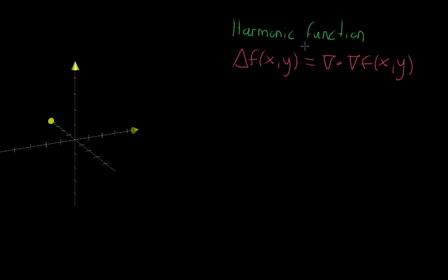Now what a harmonic function is, is one where the Laplacian is equal to zero — and it's equal to zero at every possible input point. Sometimes the way that people write this, they'll make it a triple equal sign, saying equivalent to zero. This is really just a way of emphasizing that it's not an equation you're solving for specific x and y where it equals zero. It's a statement about the function.